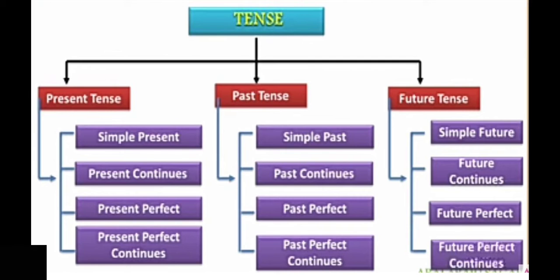Basically there are three tenses. First one is present, second one past and thirdly future. Present, past and future. Again there are four categories in each.